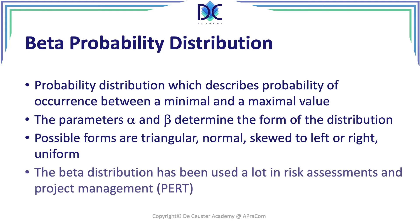The beta distribution has been the basis for the calculation of PERT assessments. The beta probability was the basis to find the PERT formula: (a + 4m + b) divided by 6 for the average, and the standard deviation (b minus a) divided by 6.